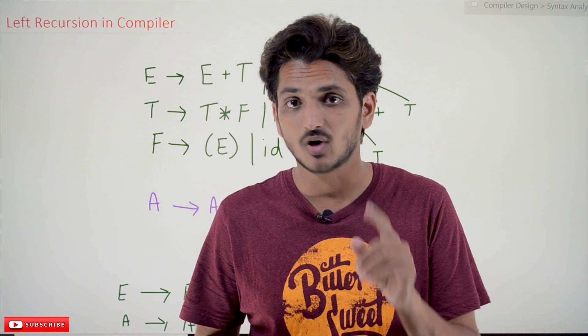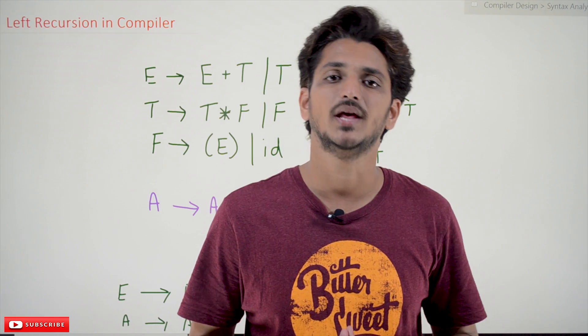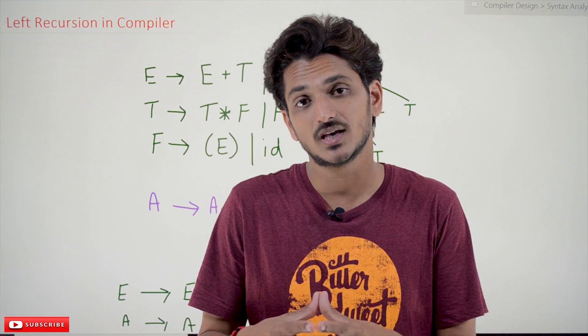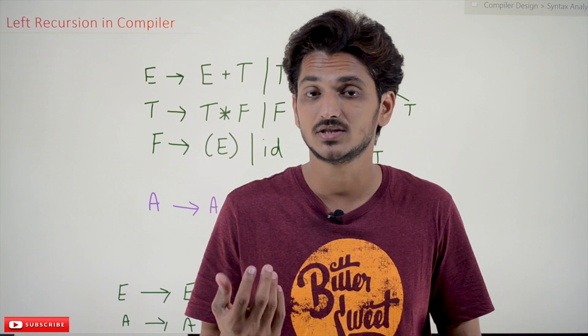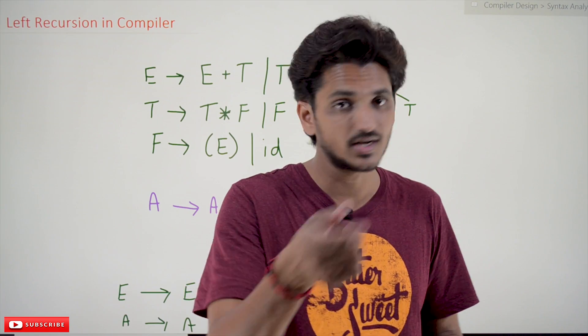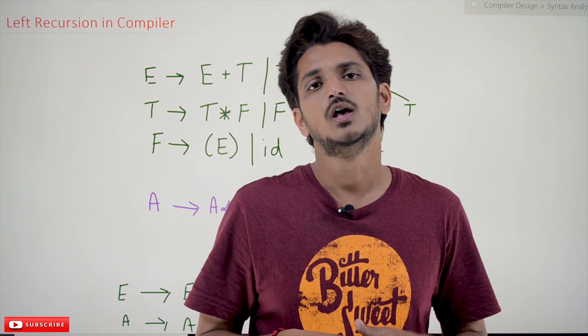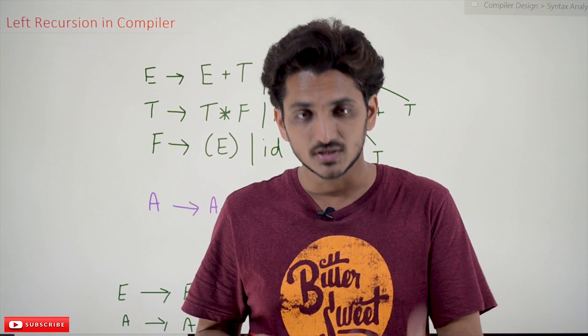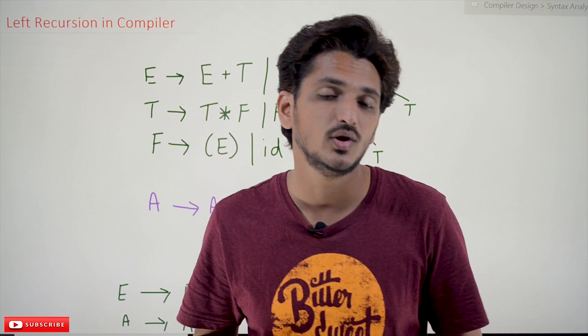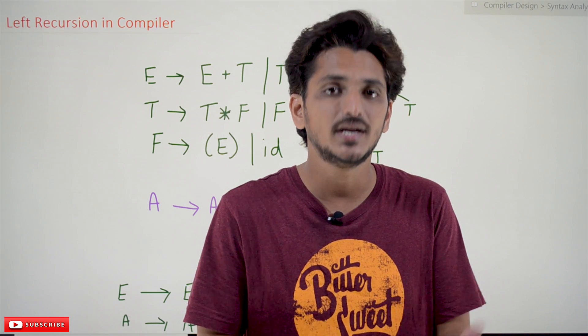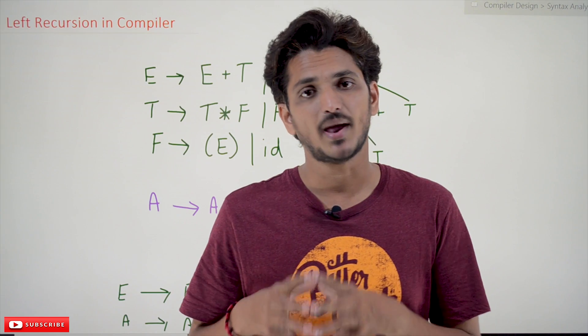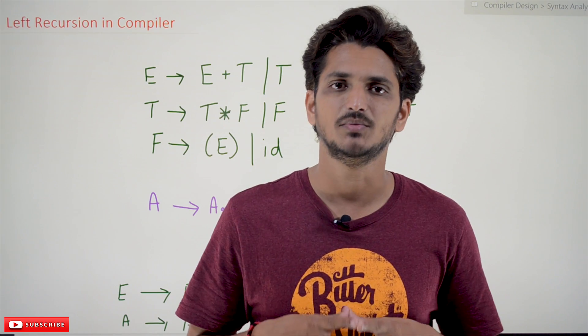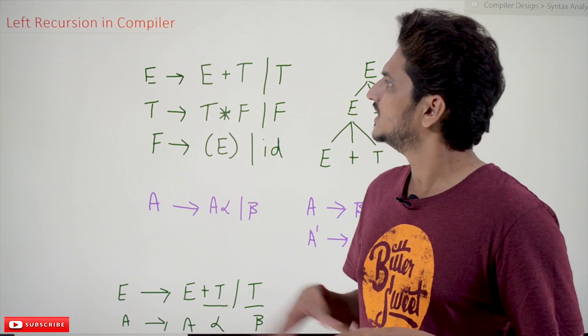This problem was already discussed in our Theory of Computation playlist, but we are using here the real-time grammar for identifying expressions. This expression grammar was already discussed in our previous class. With this real-time example, we are again going to understand the need of eliminating the left recursive grammar. Please watch our classes and come back here. The link for the playlist is provided in the description below.